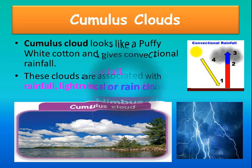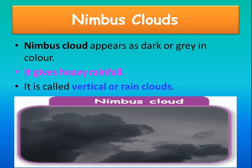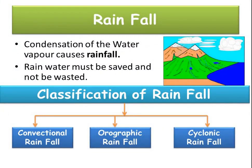The clouds which appear dark or grey in colour are called nimbus clouds. They give heavy rainfall and are called vertical or rain clouds — because they are very tall and may appear in many cloud levels. So the four types: cirrus clouds appear silver grey like fish and may not give rain; stratus clouds are grey and spread out, giving small showers; cumulus clouds look like puffy white cotton and give convectional rainfall; nimbus clouds are dark or grey and give heavy rainfall, also called vertical or rain clouds.